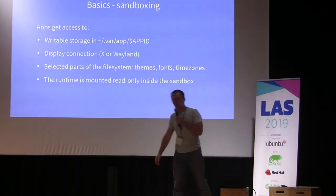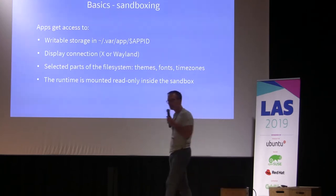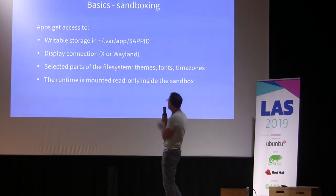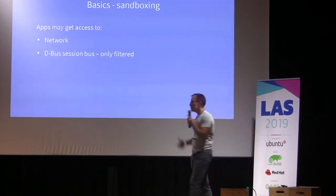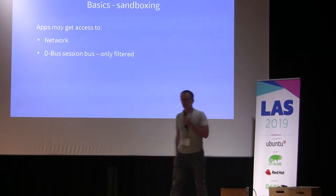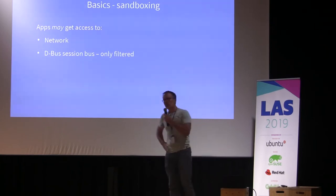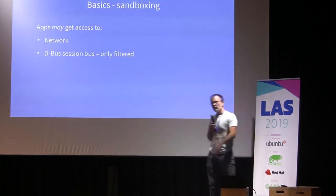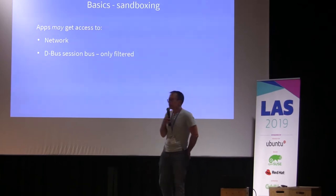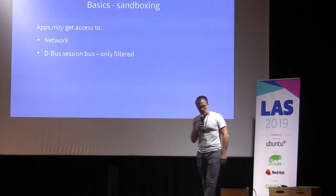In the concrete case of Flatpak, every application gets a little bit of writable storage so they can save files. Network connectivity is available, and some parts of the filesystem like themes or fonts are safe to access. But some things may not be necessary — for instance, a calculator might not need network access. The Flatpak sandbox flexibility allows you to configure what the application needs. This configuration is pretty static and is set at build time in your application manifest, though users can override it at runtime.